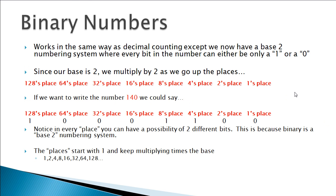Binary works the exact same way, except now we're dealing with a base-2 numbering system where every bit can only be a 0 or a 1. Because it's base 2, we still start with 1 in our chart, then multiply by the base: 1 times 2 is 2, 2 times 2 is 4, 4 times 2 is 8, 8 times 2 is 16, then 32, 64, 128, and so on.